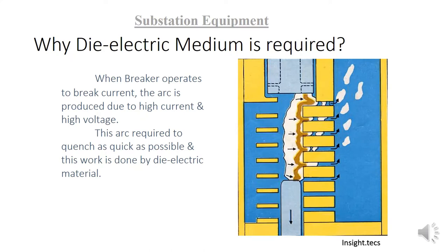Now the question may arise: why is dielectric medium required? When the breaker operates to break the current, an arc is produced due to a very high amount of current and high voltage levels. This arc requires to be quenched as quickly as possible so that it does not damage any further equipment, and this quenching of arc is done through the specific dielectric material.